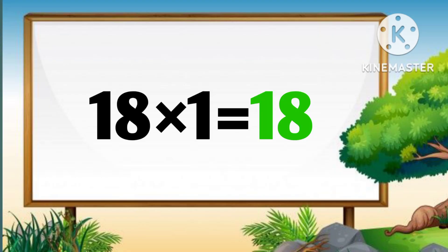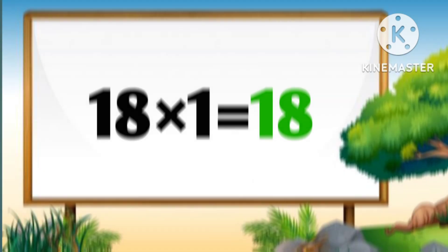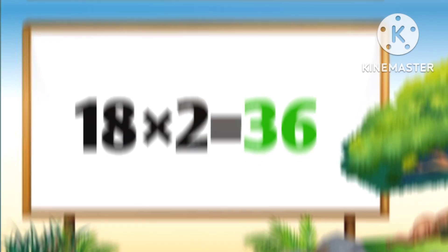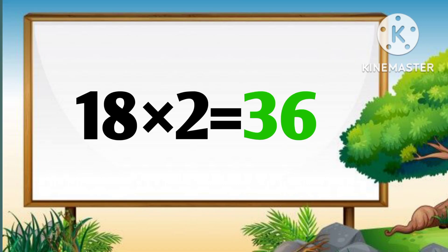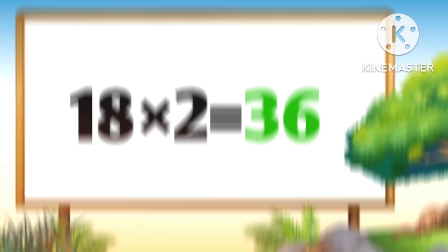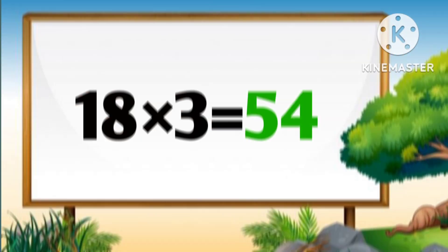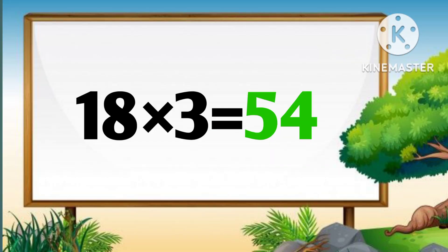Eighteen ones are eighteen. Eighteen twos are thirty-six. Eighteen threes are fifty-four.